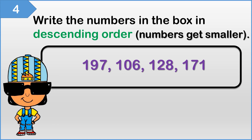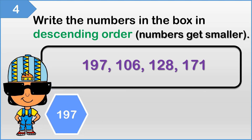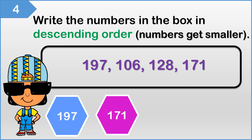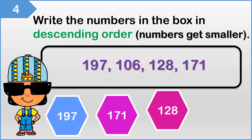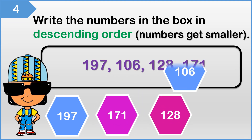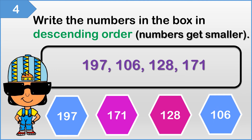So let's see what you got. You should have written down 197 first, then 171, 128, and then last 106.